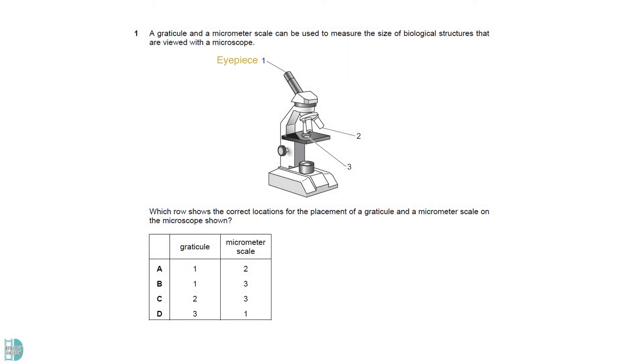One is the eyepiece, two is the objective lens, and three is the stage. A reticule is placed in the eyepiece, and a micrometer is placed on the stage for viewing.